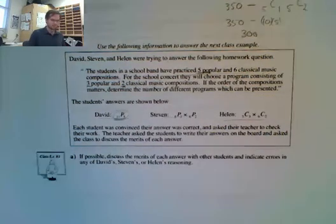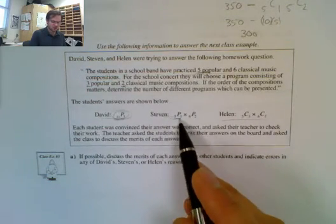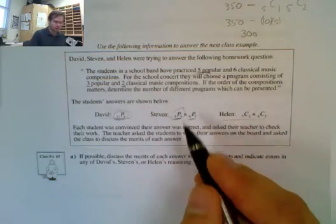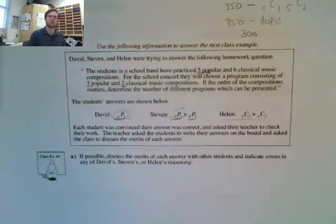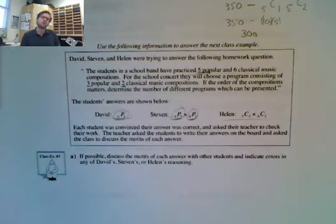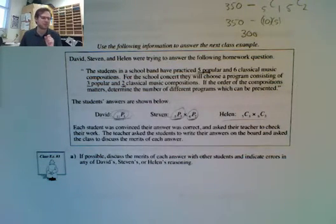Now we look at Steven here. What's the problem with Steven? He has order right, but he assumes that all the populars play consecutively, and then you choose two classical. So there's his problem. He says all the popular, and then two classical. So that's where he's off a bit.